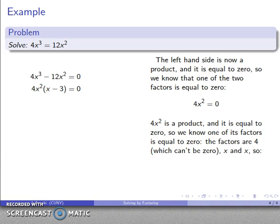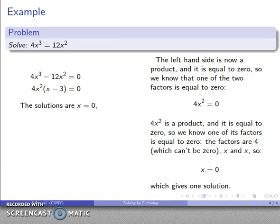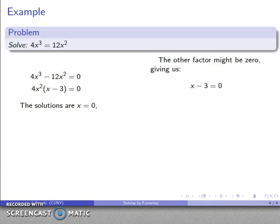4x squared is itself a product — four times x times x — so either four is zero, which can't be, or x equals zero. That first factor gives me x equals zero as a solution. My second factor: x minus three equals zero, which gives x equals three. So my two solutions are x equals zero and x equals three.